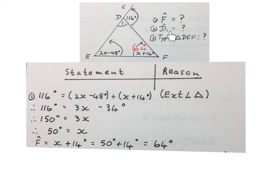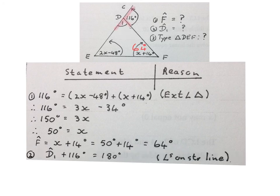Next they ask us to work out the size of angle D1. One possible solution is you may write D1 plus 116 degrees is 180 degrees. Reason: angles on a straight line. Those two angles are adjacent supplementary. That means they add up to 180 degrees.